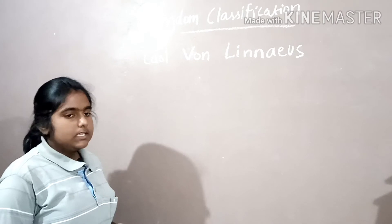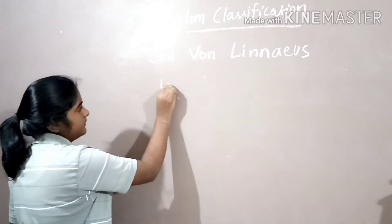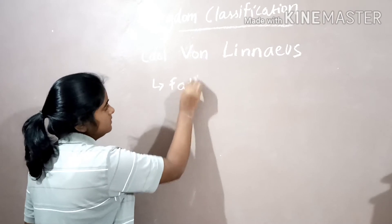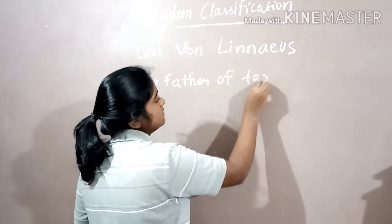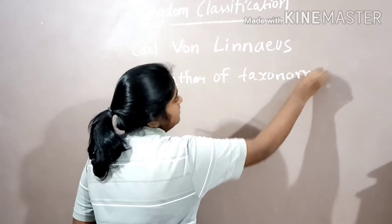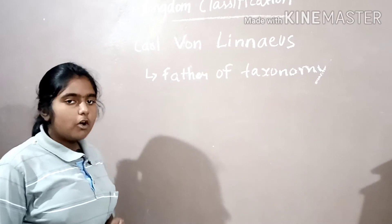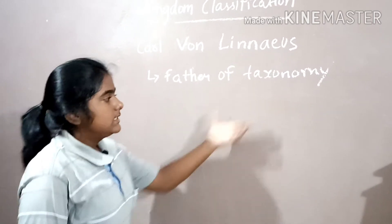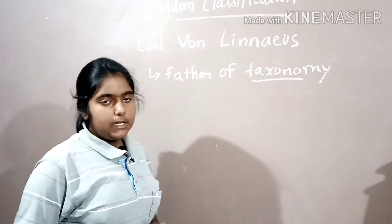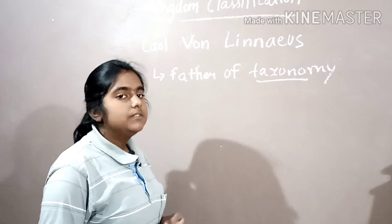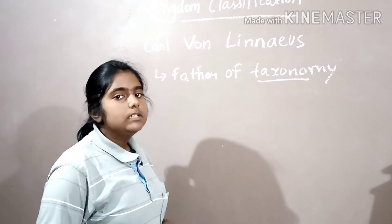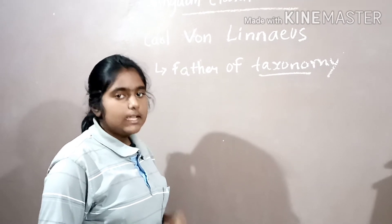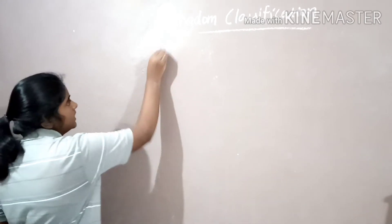Carl Linnaeus is known as father of taxonomy because he gave a simplest form of naming and grouping organisms. Taxonomy is a branch of biology which deals with the study of naming and grouping things, and the persons who study taxonomy are known as taxonomers.